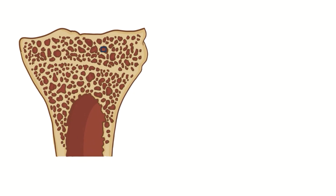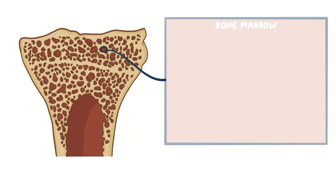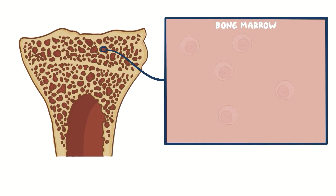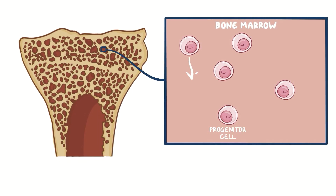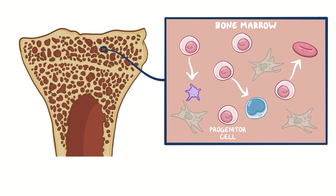Many cells in the bone marrow are hematopoietic progenitors, which are precursors to the different types of blood cells. In addition to these cells, there are fibroblasts, which are connective tissue cells.